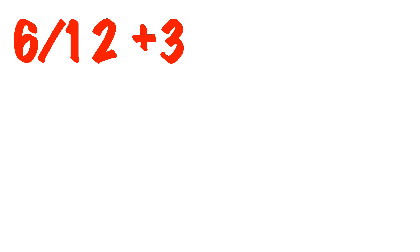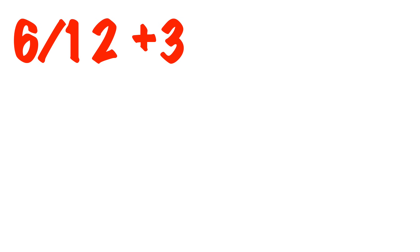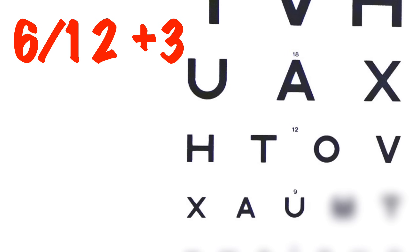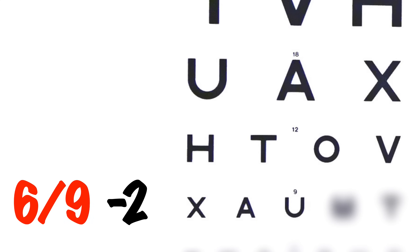Sometimes you may see VA expressed as 6/12 plus 3, or 6/9 part, or 6/9 minus 2. Confusingly, they all mean exactly the same thing — that the patient can read down to line 12 and get three letters from the next line down, part of line 9, or all of line 9 apart from 2.